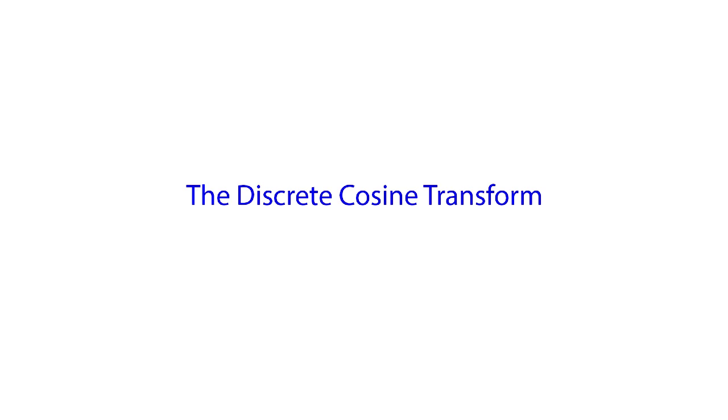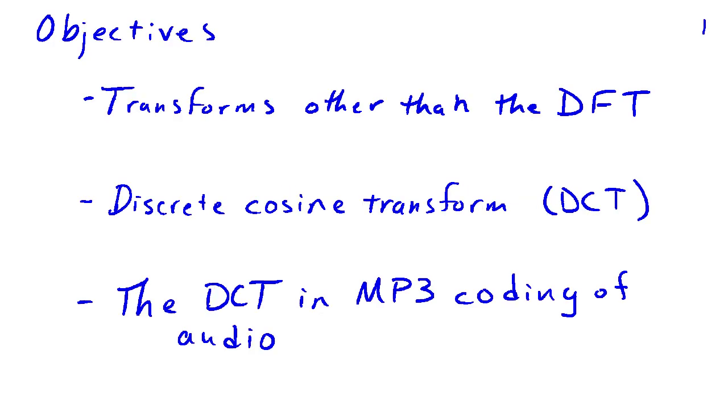The discrete cosine transform is very similar to the more familiar discrete Fourier transform. In this video, we're going to look at why we might consider transforms other than the discrete Fourier transform, introduce the discrete cosine transform, and examine the role of the discrete cosine transform in mp3 coding of audio.